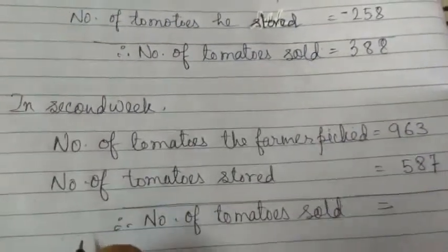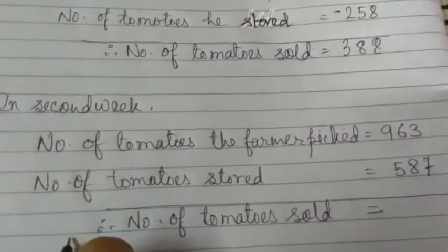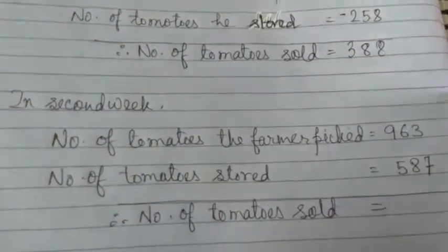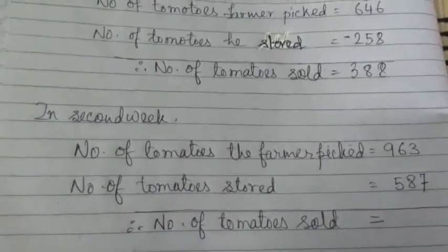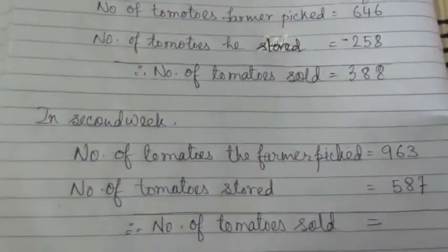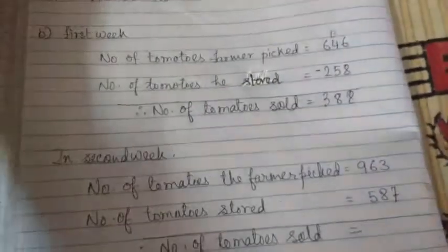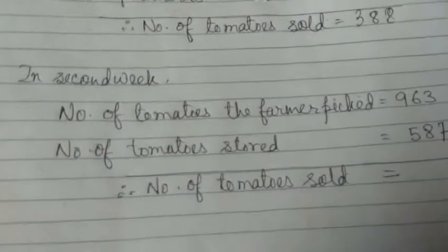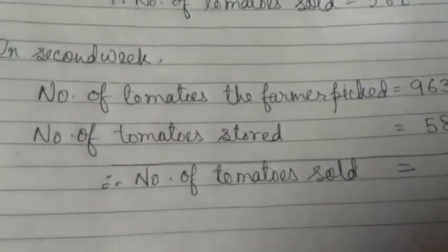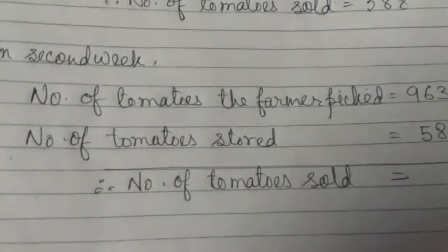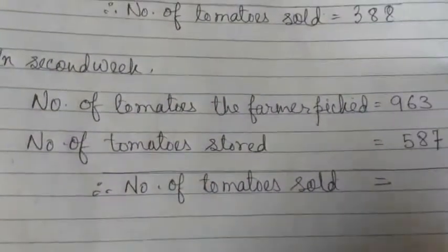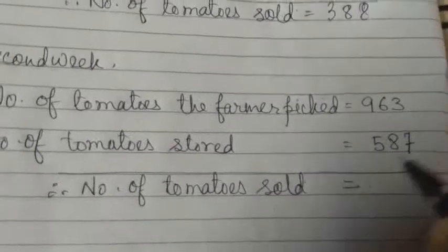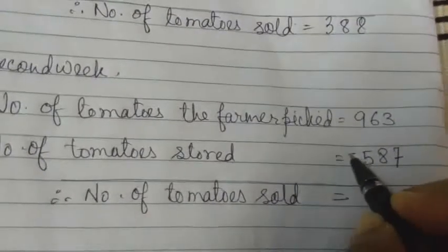For the second week, number of tomatoes picked is 963. Number of tomatoes stored is 587. So number of tomatoes sold — we have to do subtraction.